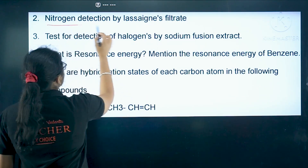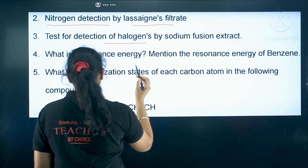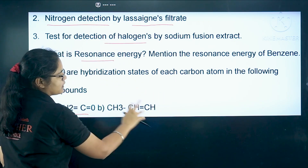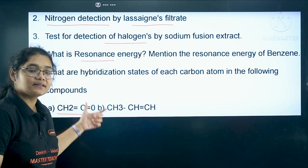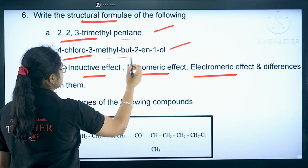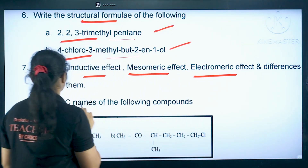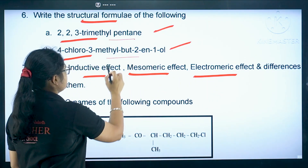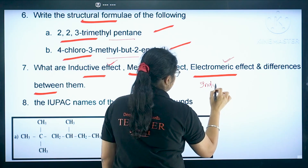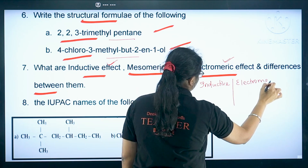Now coming to more important questions: nitrogen detection by Lassaigne's filtrate — this is an important question. Next, detection of halogens. Next, what is resonance? Hybridization state of each carbon in given compounds — for example CH2 and similar compounds, you should know the hybridization state of each carbon. Also, structural formula — once you know the IUPAC name you can draw the structural formula. What are inductive effect, mesomeric effect, electromeric effect, and the differences between them — especially the difference between inductive effect and electromeric effect, which is asked regularly.